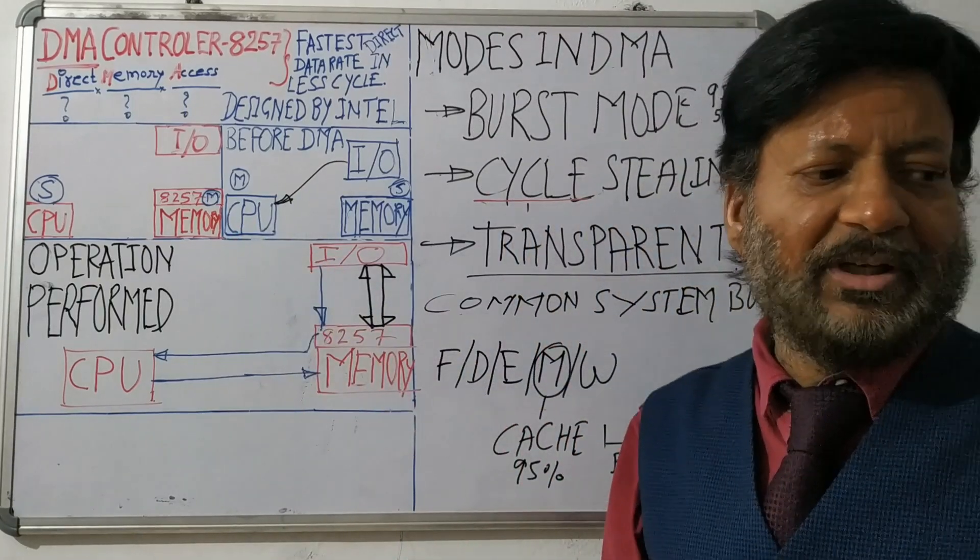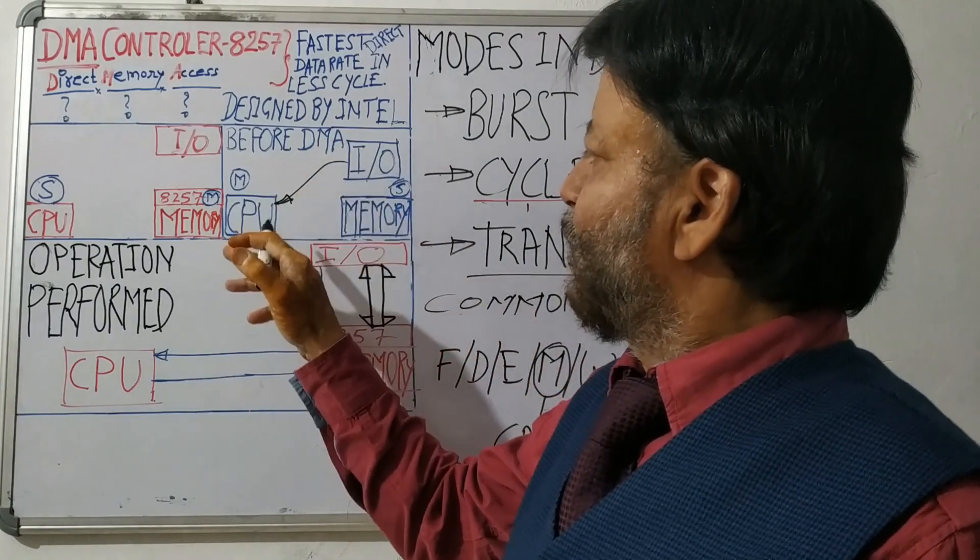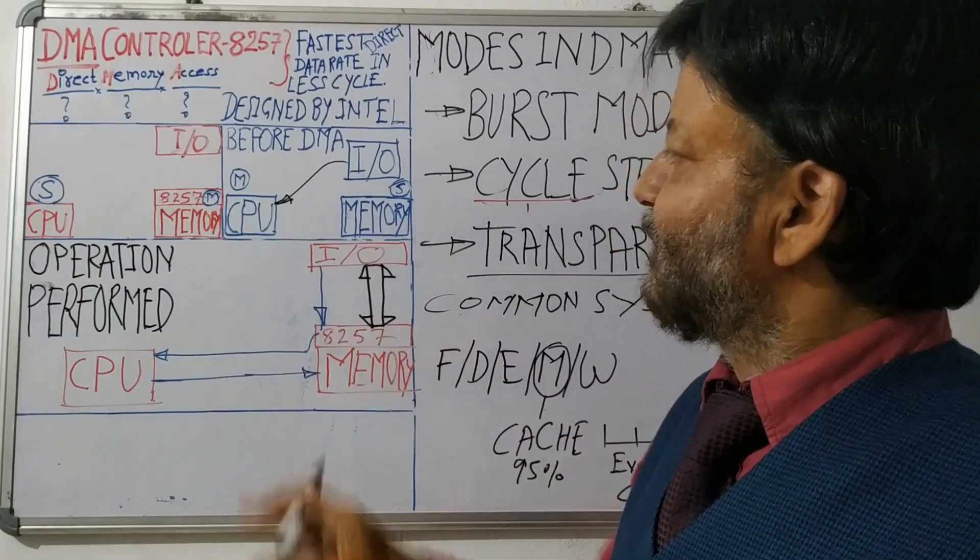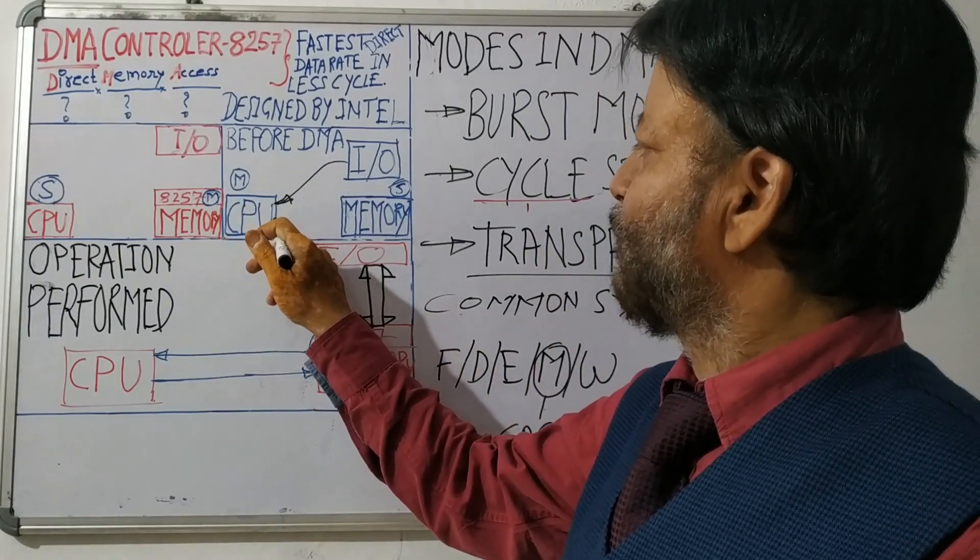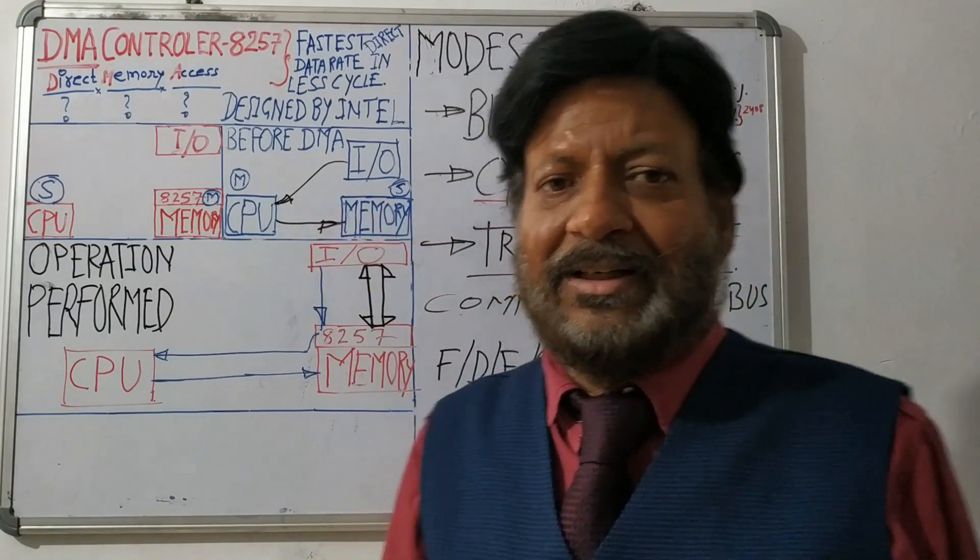Registers are temporary memory for CPU. So CPU takes the data from IO, it stores that data in its temporary memory called register, then CPU will transfer that data from register to memory. So this is the way things were happening earlier.